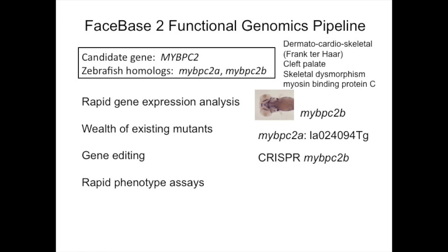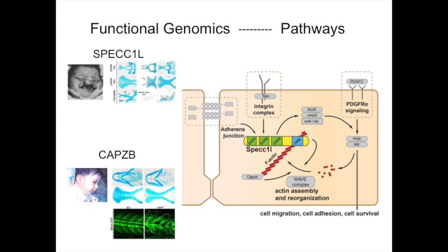There are two zebrafish homologs due to genome duplication. A mutant already exists for the MYBPC2A homolog, so we can rapidly generate MYBPC2B via CRISPR — in fact, we can inject CRISPR into the transgenic immediately to make the double knockout. This illustrates how annotating genes one by one reveals emerging pictures: SPEC1L, CAPZB, and now MYBPC2 are all cytoskeletal proteins — SPEC1L is a scaffolding protein with coiled-coil and pleckstrin homology domains associating with filamentous actin, CAPZB caps expanding actin, and MYBPC2 has domains that interact with actin directly.